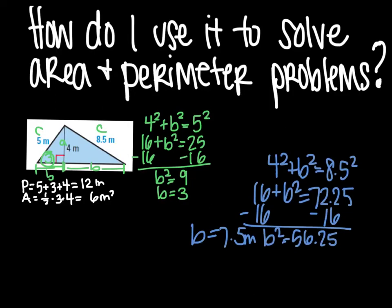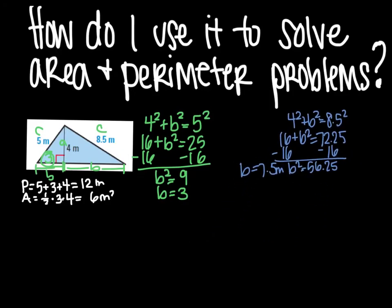And B squared equals 56.25, which means then that B equals 7.5 meters. And we can use that information to find the rest of the information. So the slightly bigger triangle, the perimeter, would be 4 plus 8.5 plus 7.5, which would give us 20.